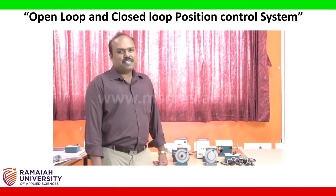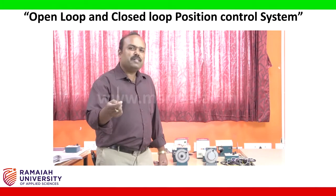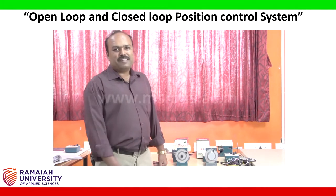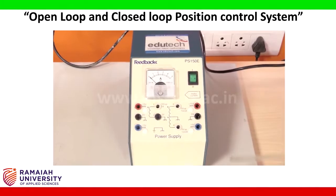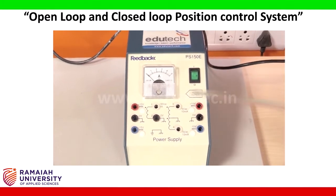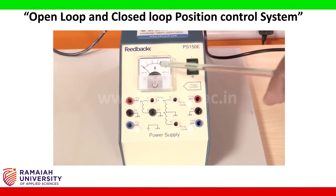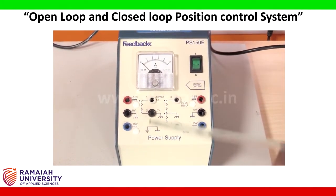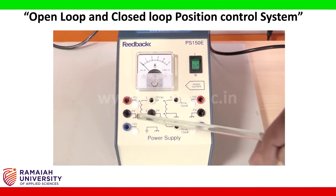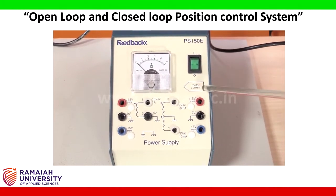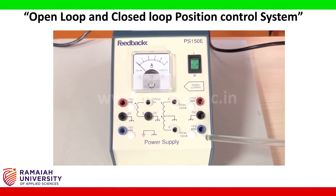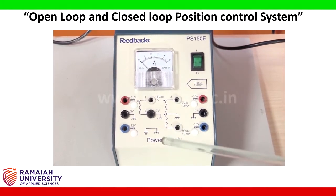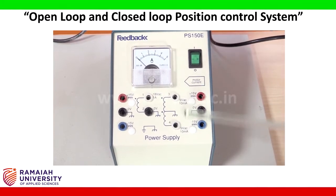Hi students, the name of the experiment is a motor driven simple open loop and closed loop position control system. The equipment required for this experiment includes the power supply. As you can see on the front panel, it has a power on/off switch, an ammeter to read the current, and two sets of plus or minus 15 volts DC supply — with plus 15, ground, and minus 15 terminals. It also has two sets of AC supplies.